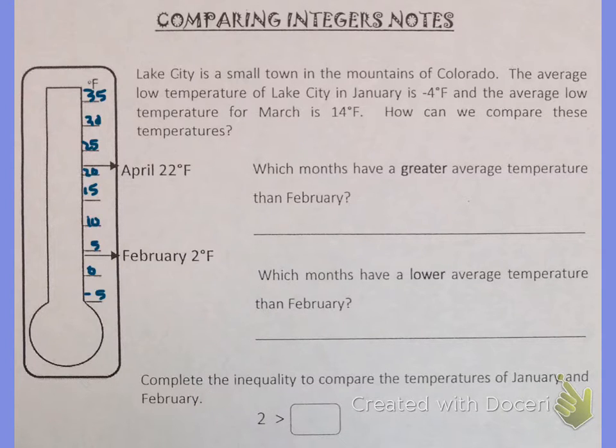So label your thermometer the way that I've labeled mine. I have negative 5 at the very bottom and positive 35 all the way at the top. So the first question says which months have a greater average temperature than February?